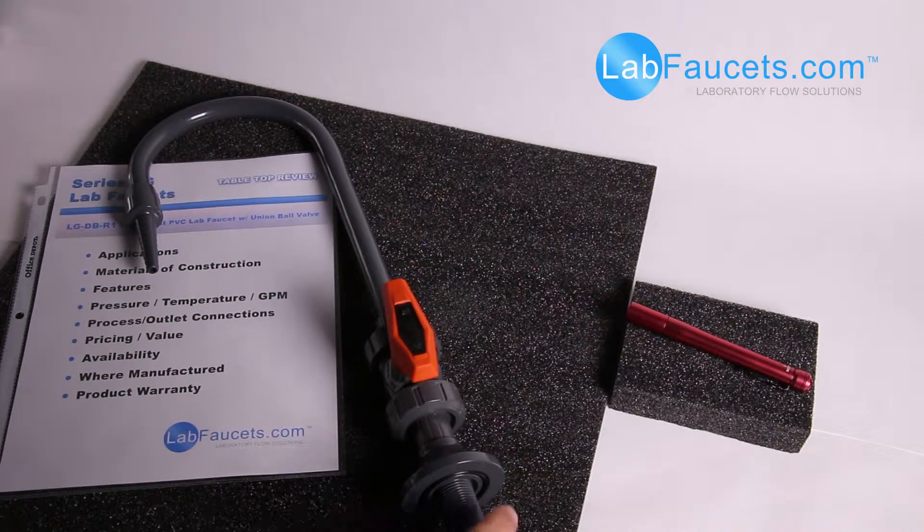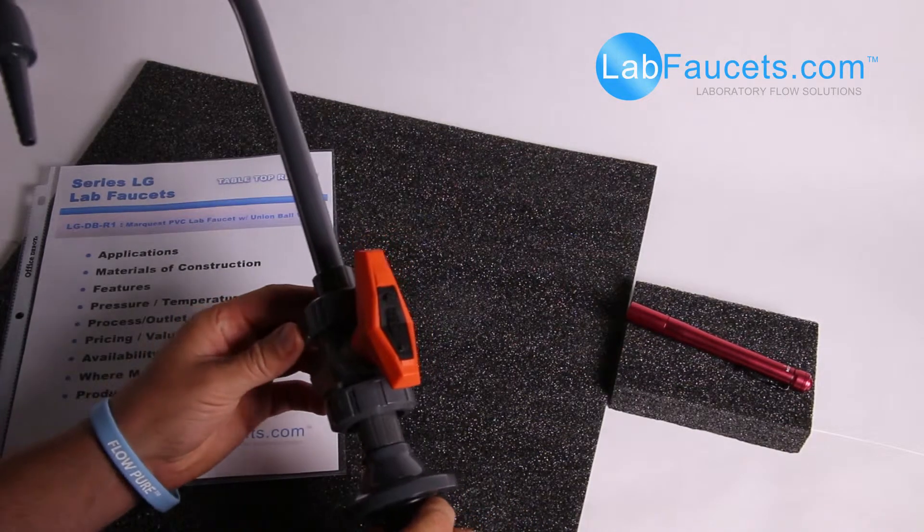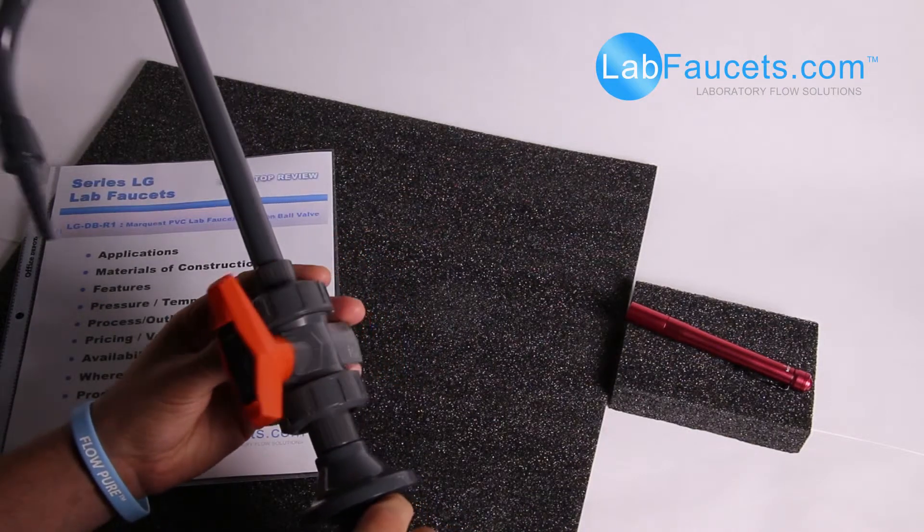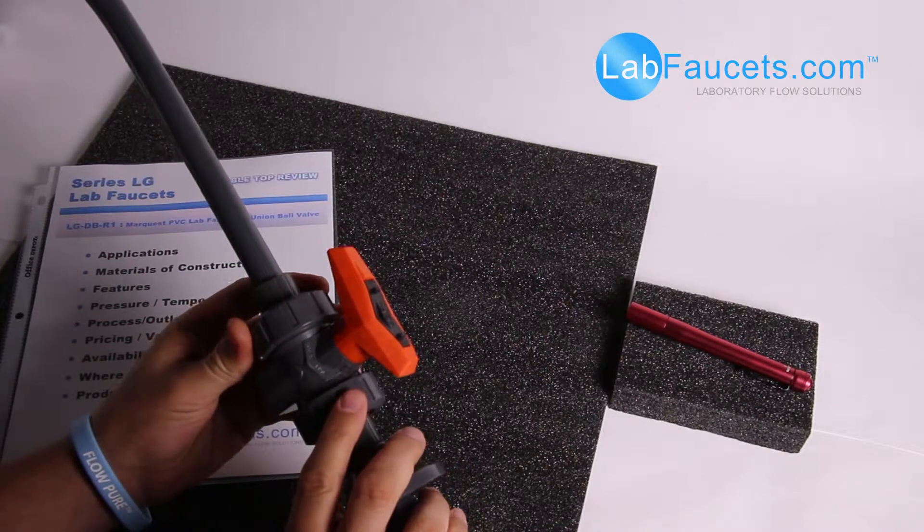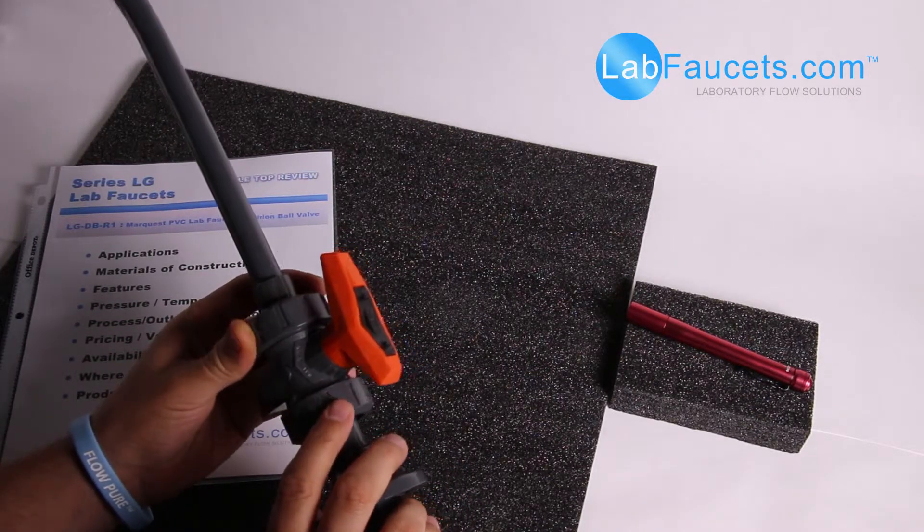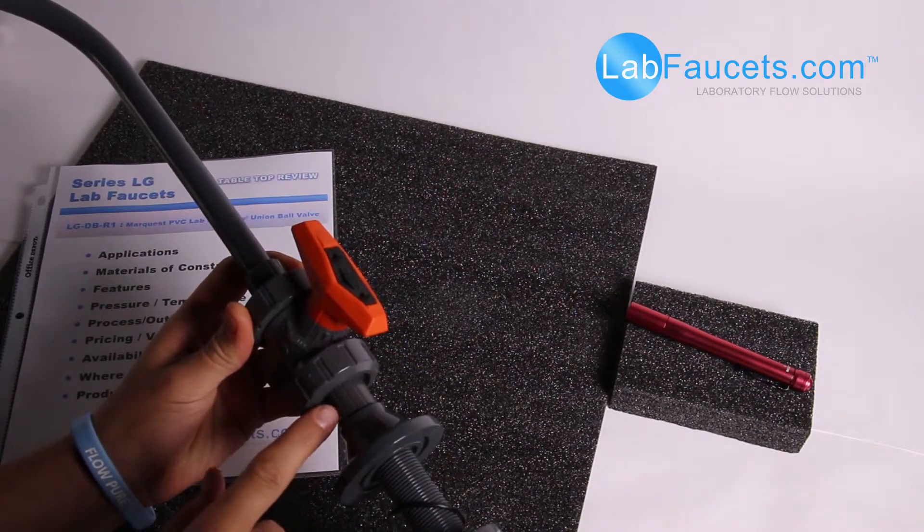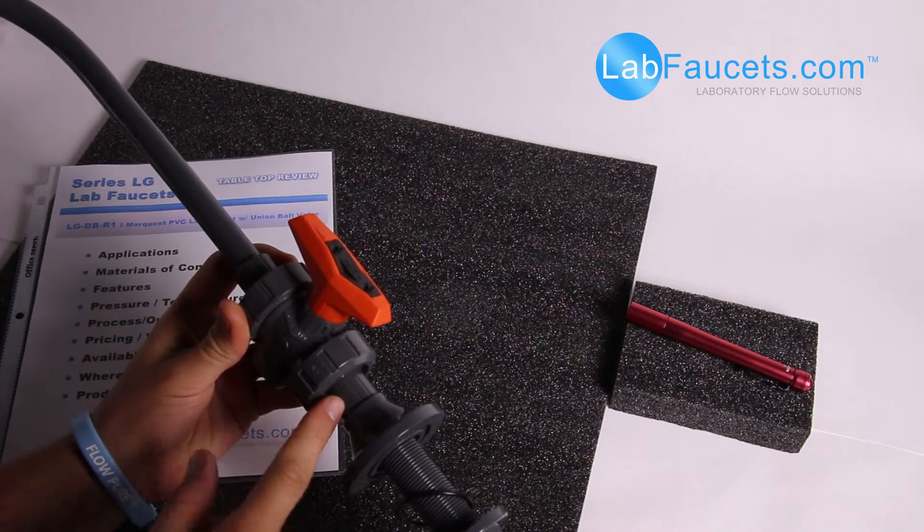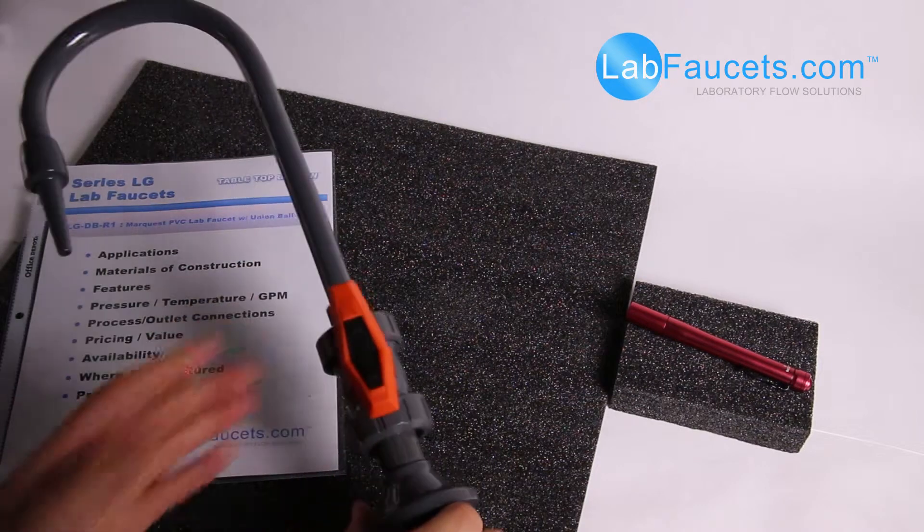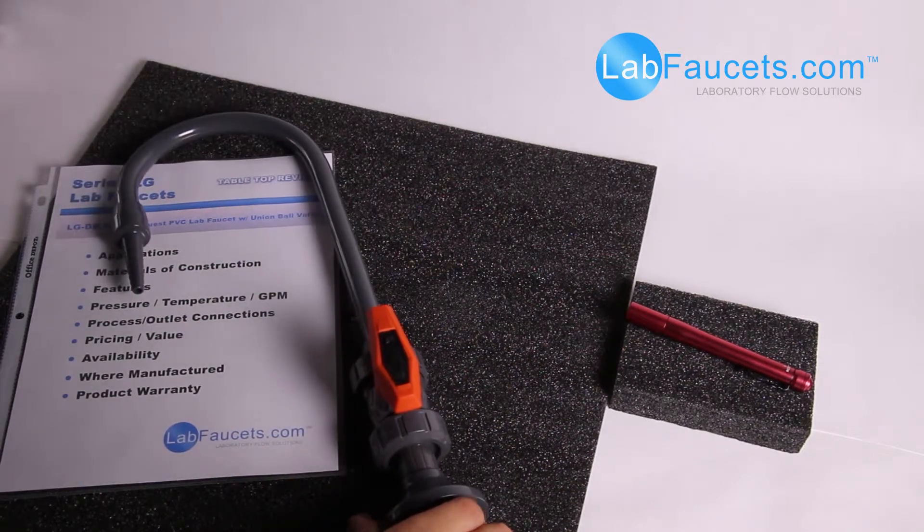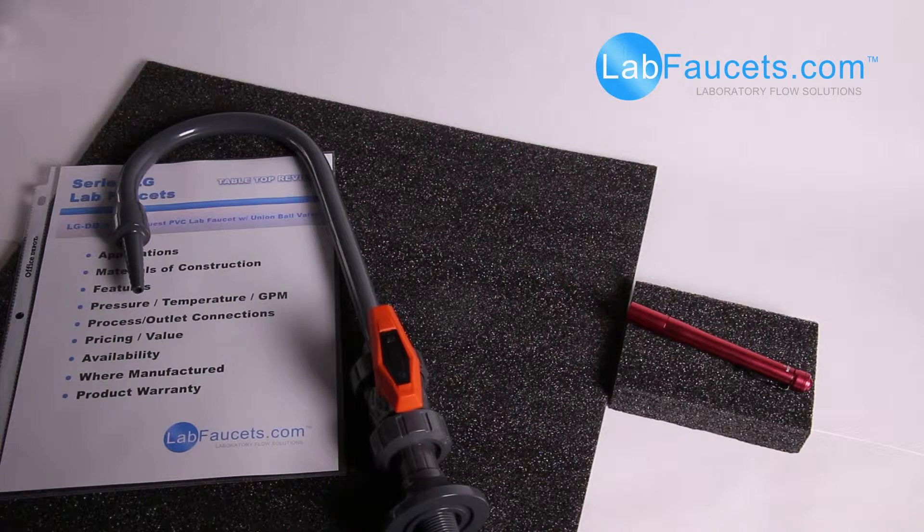The Viton is basically just the O-rings that are inside this true union PVC ball valve that seal the adapter to the ball valve body. These units are also available in natural polypropylene and PVDF.